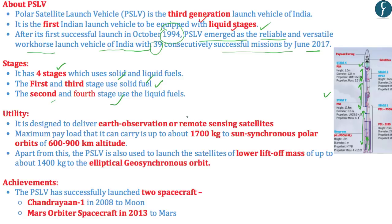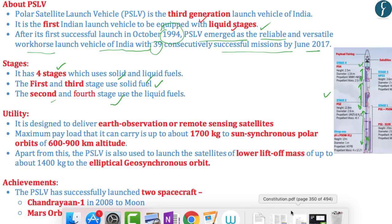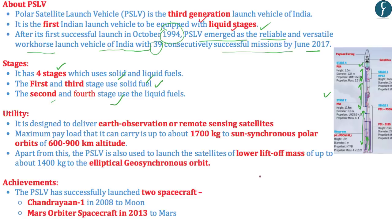PSLV is designed to deliver earth observation or remote sensing satellites. Earth observation is the gathering of information about the physical, chemical and biological systems of the planet via remote sensing technologies, which can be supplemented by surveying techniques. Remote sensing is gathering information about an object or phenomenon without making physical contact, especially of the earth. Remote sensing is extensively used in geological surveys, geographical surveys, study of hydrology, glaciology, and understanding minerals found in an area. It also has military and intelligence applications.